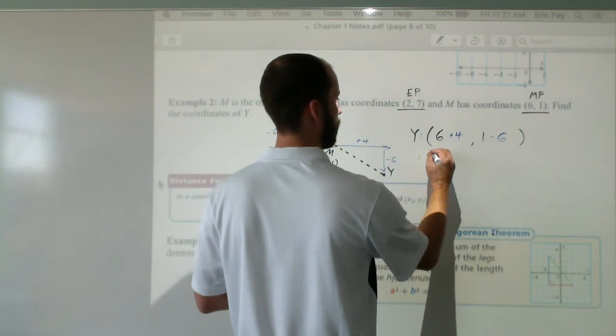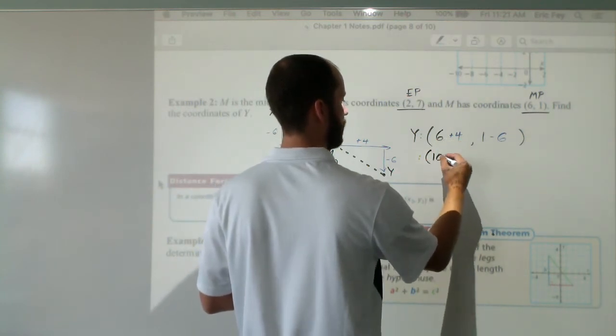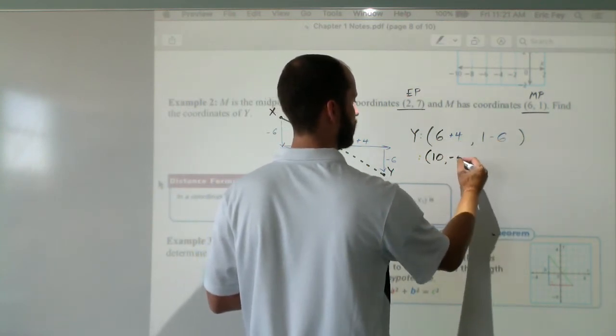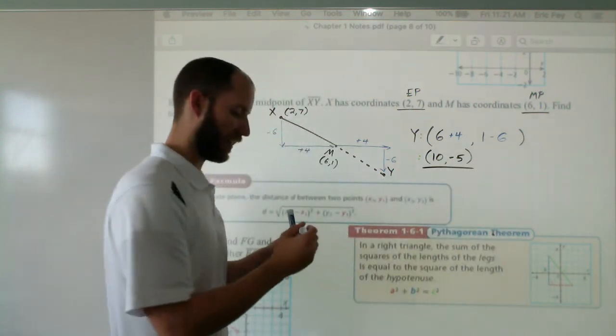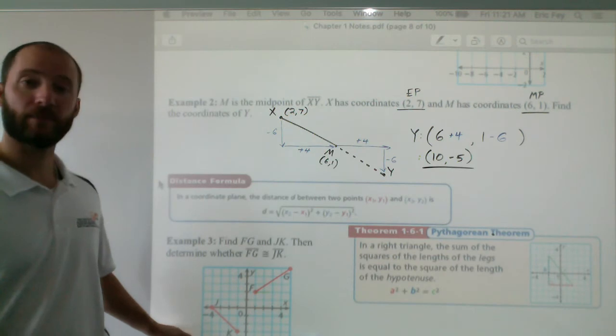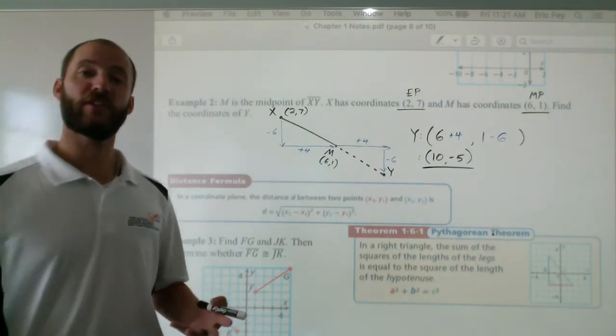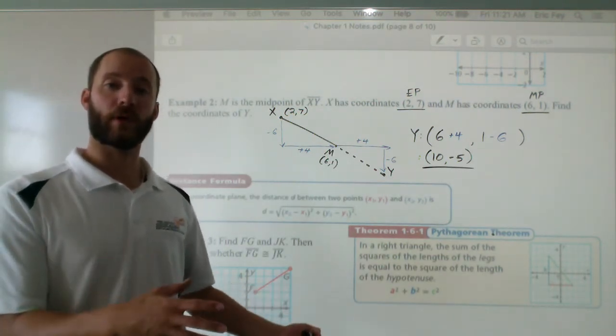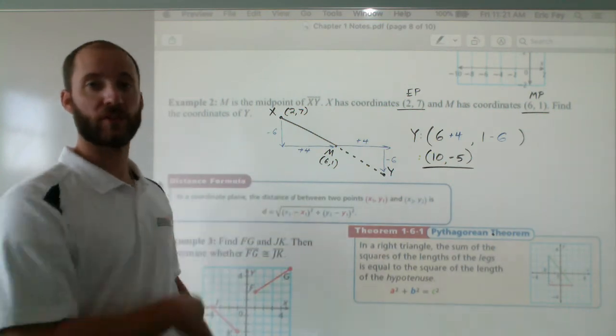So we will get our y-coordinates. 6 plus 4 is 10. 1 minus 6. Negative 5. So a little bit of creative problem solving required, but it's something you can definitely do visually. If you want, you can work with a formula. There's also this option.